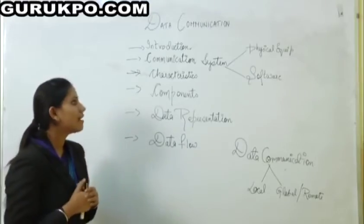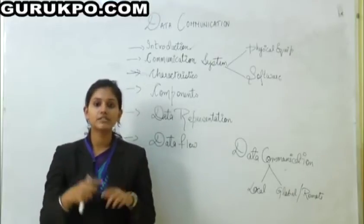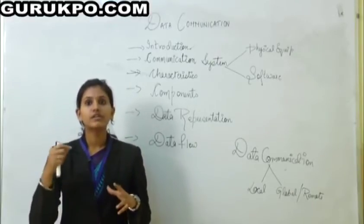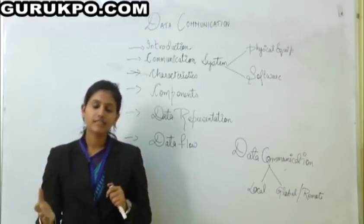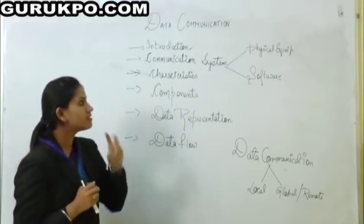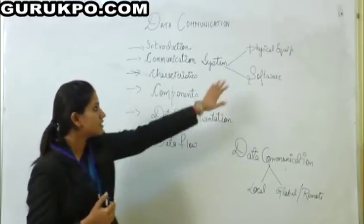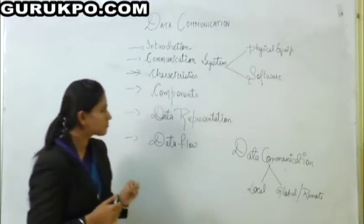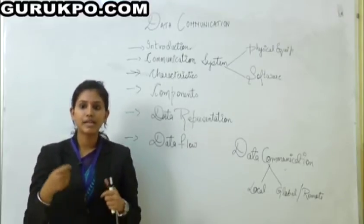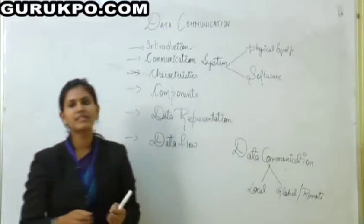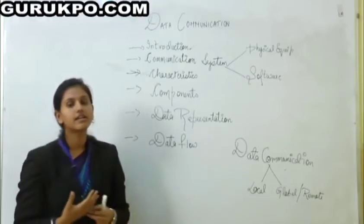Now, communication system. A communication system is a system through which communication is done, or it is a system through which transmission and processing of data transformation is done. There are two things needed for communication: first is physical equipment, and second is software. Software is basically a program or some application through which communication is done. Physical equipment is a physical pathway or some medium through which communication is done, like wire, cables, or optical cables.